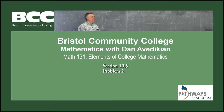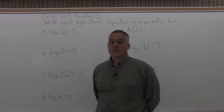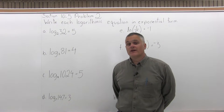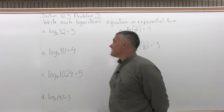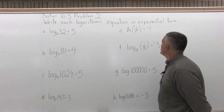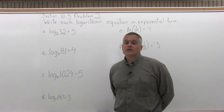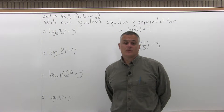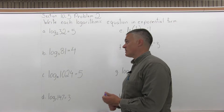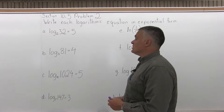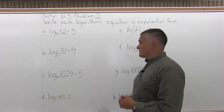Bristol Community College, Mathematics with Dan Avadykian, Math 131, Elements of College Mathematics, Section 10.5, Problem 2. This is Section 10.5, problem number two. It says write each logarithmic equation in exponential form. There are eight equations written with logs that they want you to convert to a regular equation with a base and an exponent. It goes parts A through H for the eight parts.